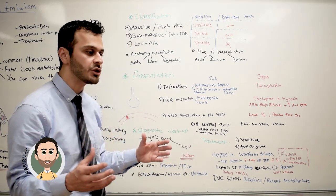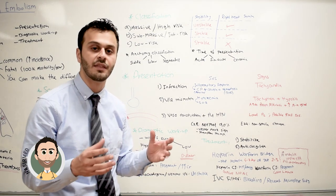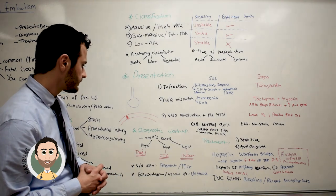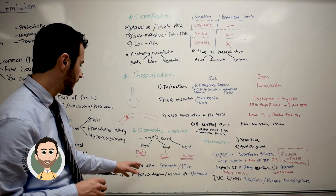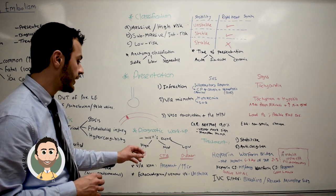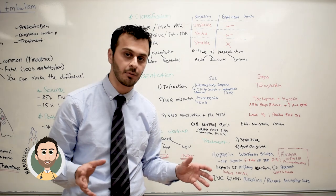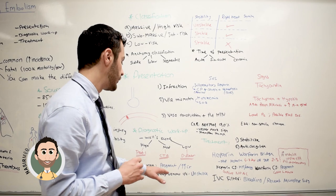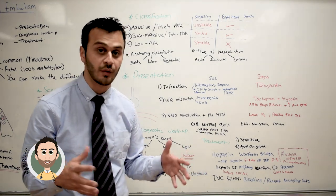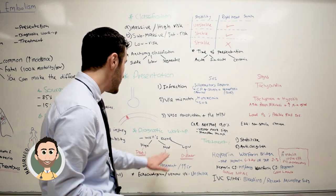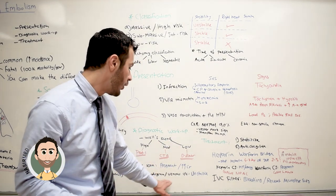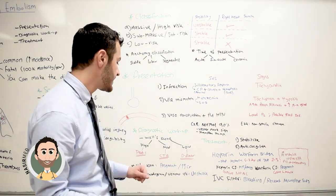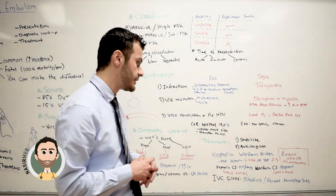Any inflammation or reaction in the body can cause an elevation in D-dimer — that's why it's not very specific. However, if the patient is hemodynamically unstable, you don't have time to wait for CT angiogram or VQ scan. In this case, you can order an echocardiogram or venous ultrasound, which can be rapidly done at bedside and give you the diagnosis immediately.